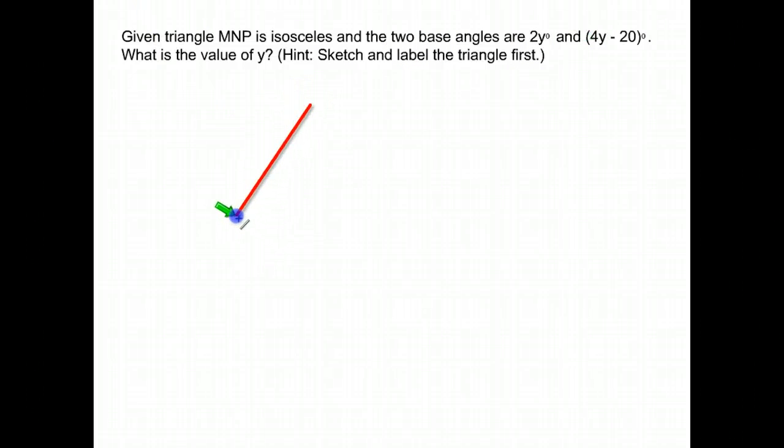They just tell me I have an isosceles triangle, so I'm going to draw a picture of an isosceles triangle and label it as MNP.